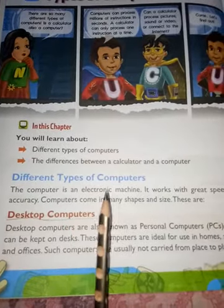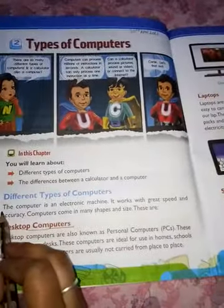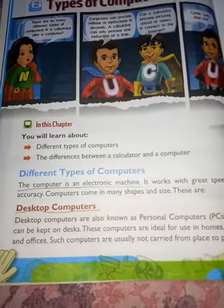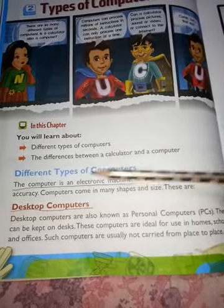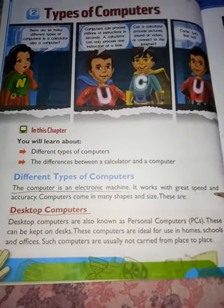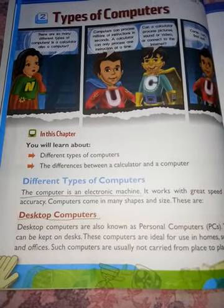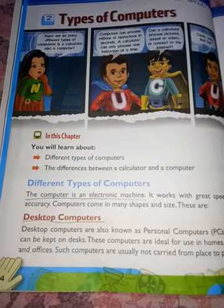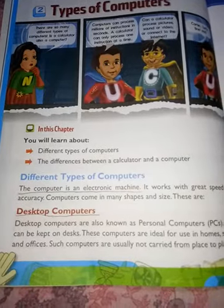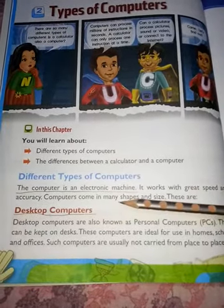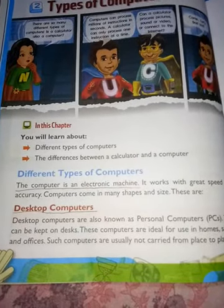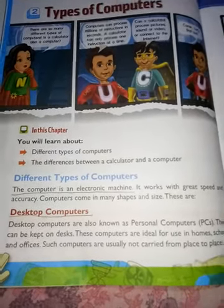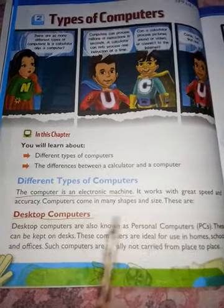The computer is an electronic machine — underline this sentence, it is the definition of computer. A computer works with great speed and accuracy. It can work very speedily without making any mistakes and gives very accurate results. Computers come in many shapes and sizes and are available in different types in the market.